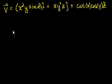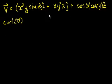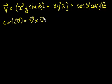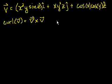We said that you can view the curl of this vector field — I have no intuition of what this vector field looks like, I just made this up — as a cross product of our del operator and the vector field. When you're using engineering notation, when you have a vector broken down into its x, y, and z components, or its i, j, and k components, you can take the determinant of that matrix to figure out the cross product.